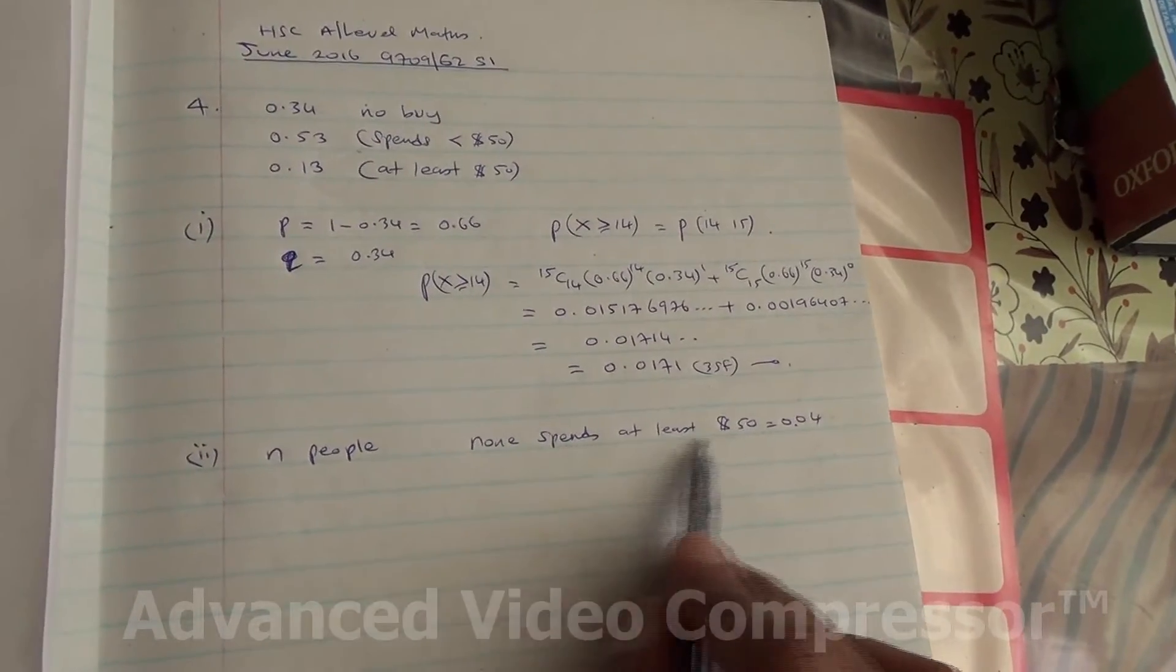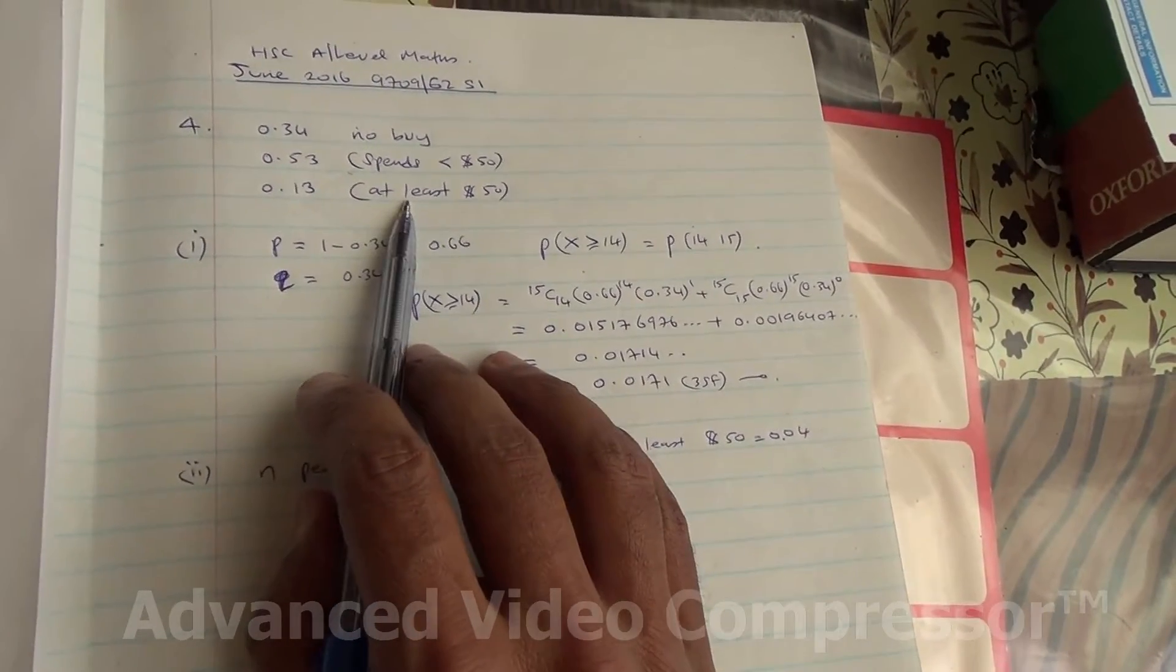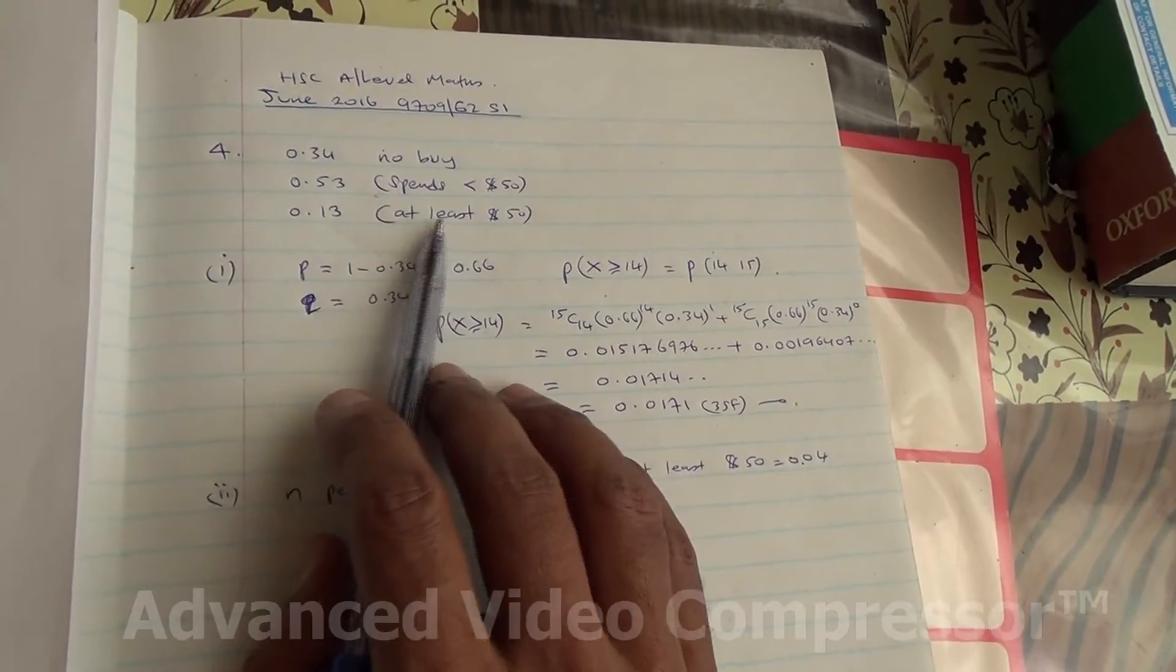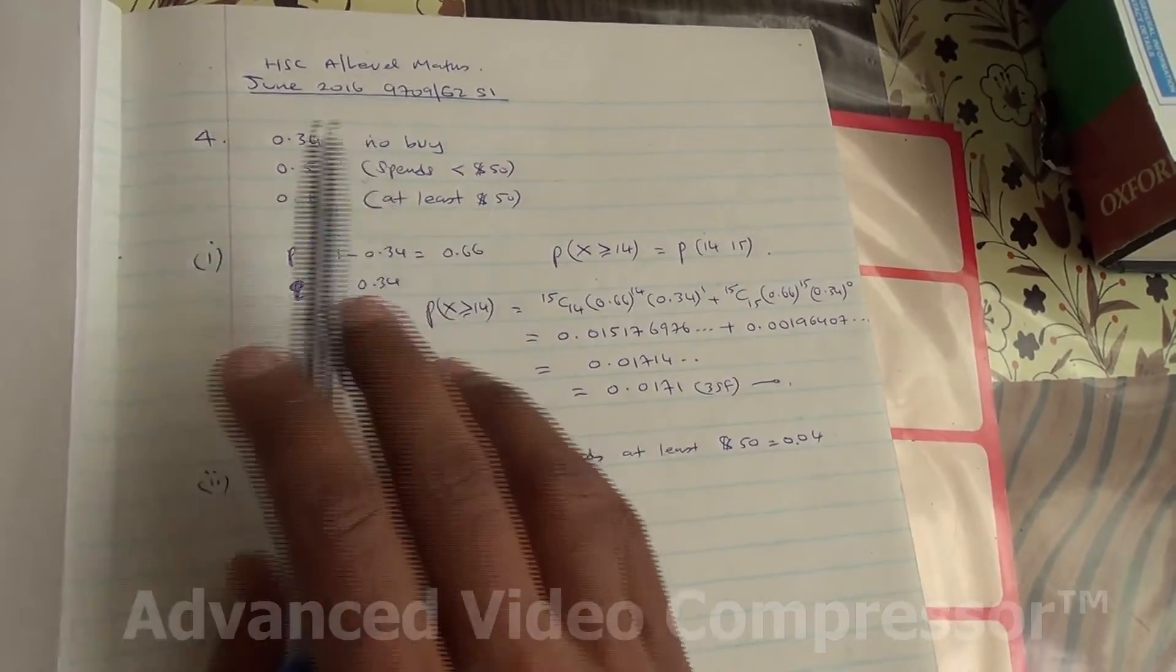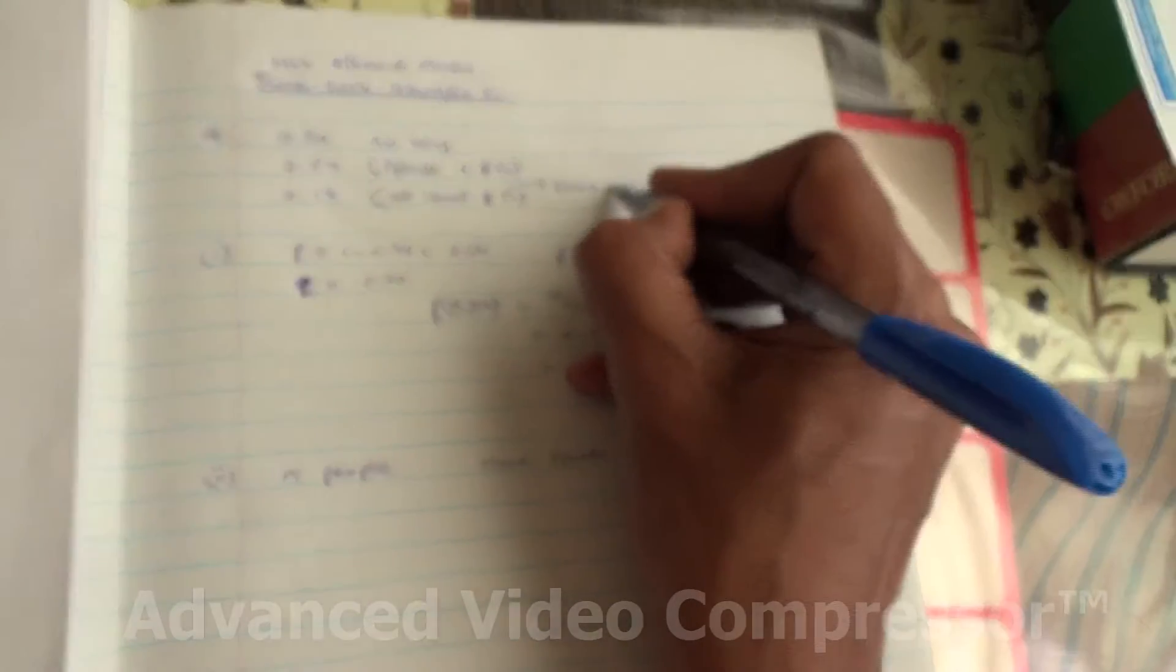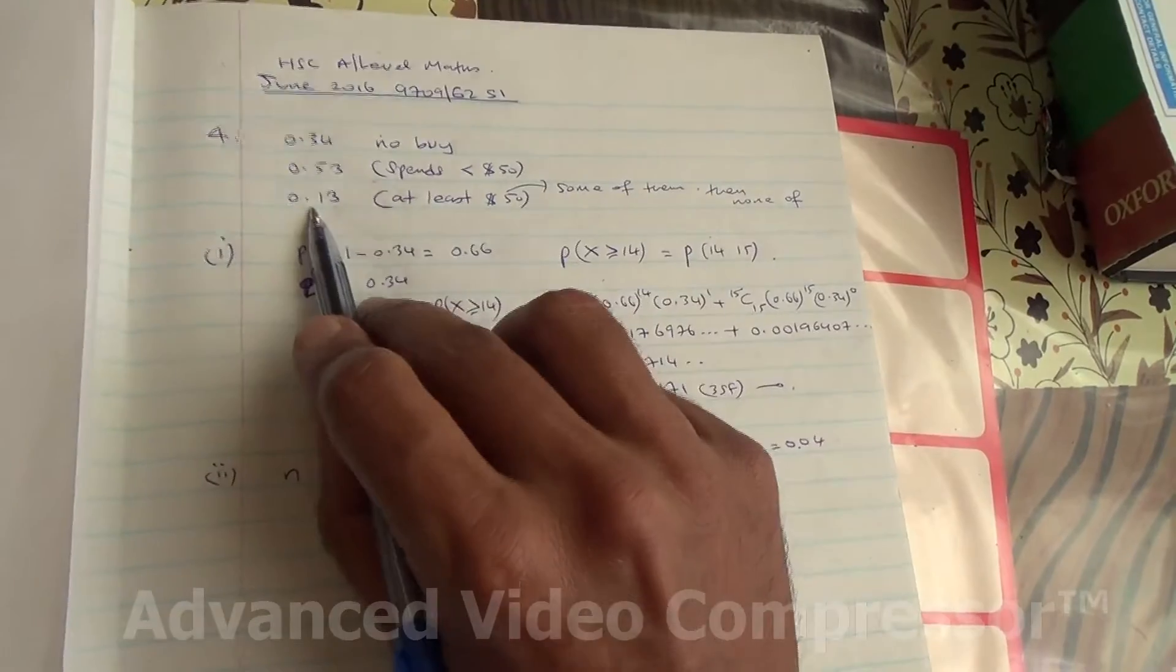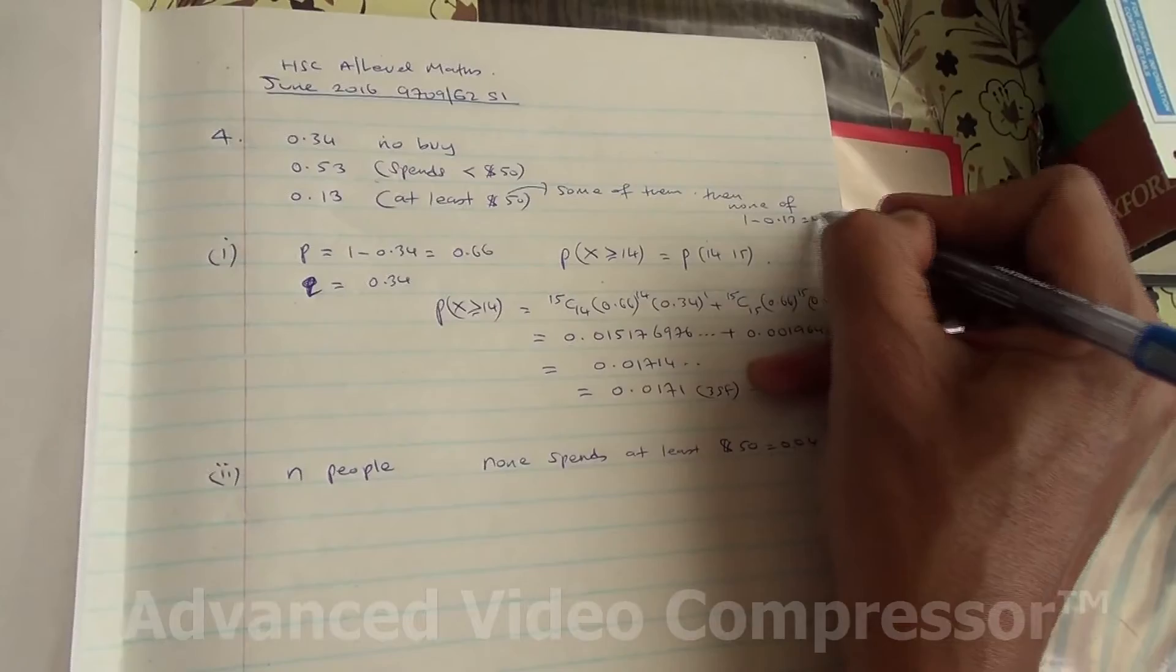Now, the probability that none of them spend at least, we have the probability that at least is going to be 0.13. What's the probability of none of them spends at least $50? Some of them are spending at least $50. So, none of them now, if none of them, then none of them spends at least $50 is going to be 1 minus 0.13, 1 minus 0.13, which is then 0.87.